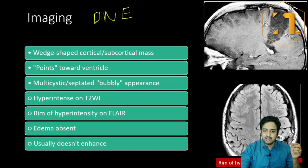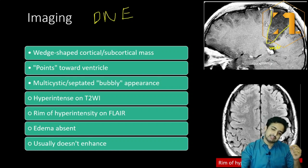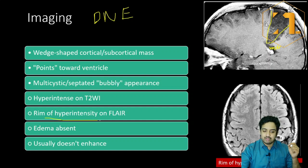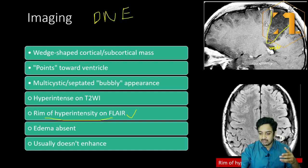DNET — dysembryoplastic neuroepithelial tumor — is a benign neoplasm seen in patients less than 20 years of age. The patient will have intractable, drug-resistant epilepsy because of a focal mass in the brain. In FLAIR images, DNET will show a rim of hyperintensity, known as the hyperintense rim sign. The lesion has a bubbly appearance, a wedge shape pointing towards the ventricle, and FLAIR rim hyperintensity — these are the classical features.